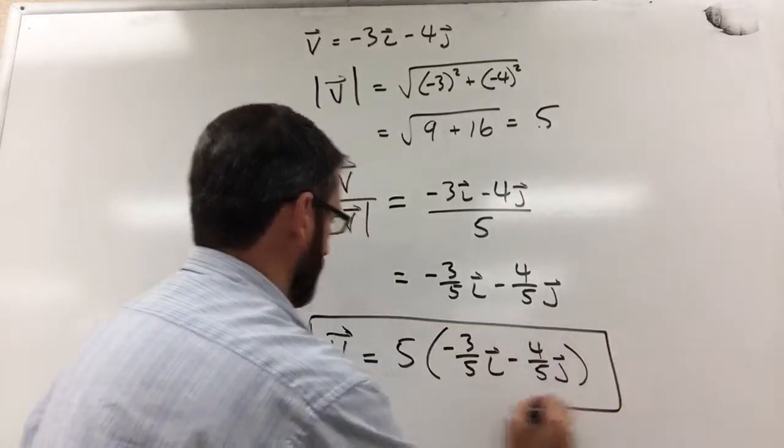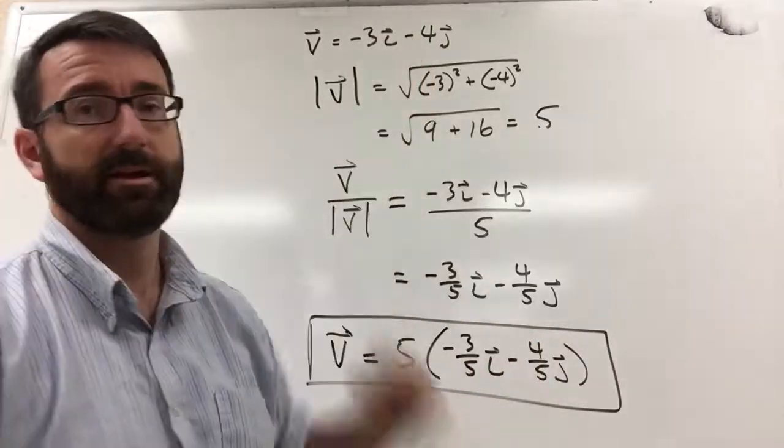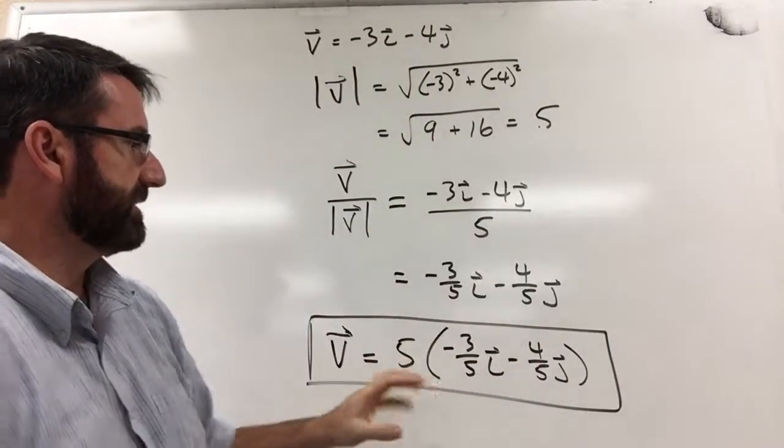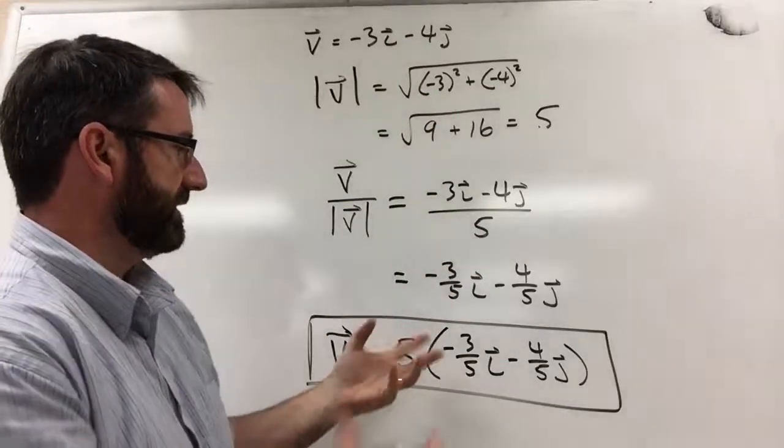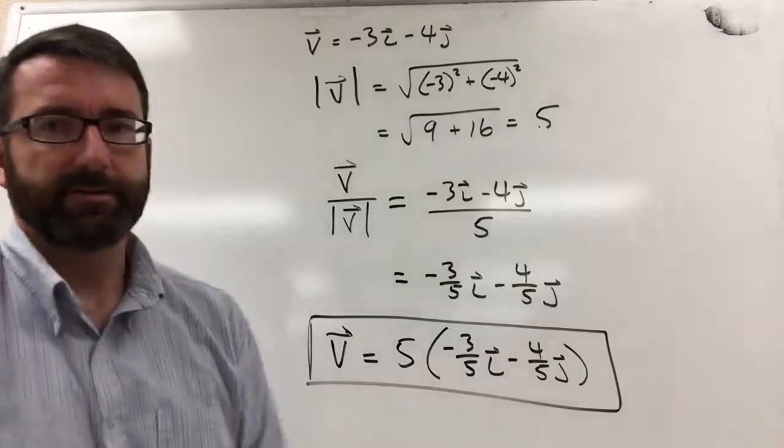Now obviously that's our answer, but if we distributed that 5, we'd get back to what we started with. But what we've done here is separate this vector out with its magnitude and its direction. Thank you.